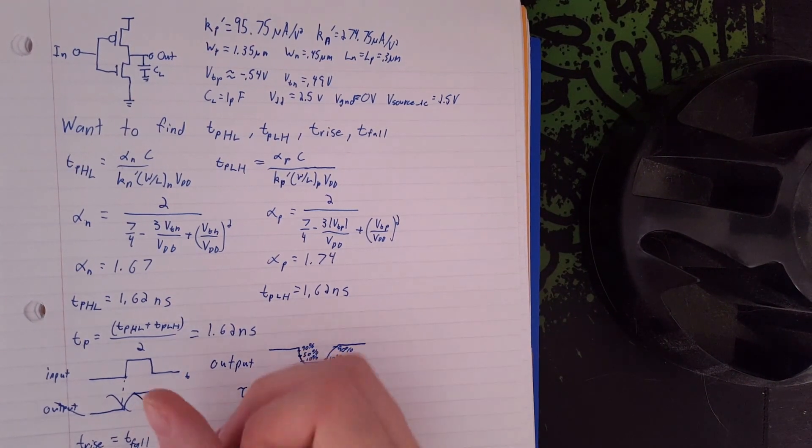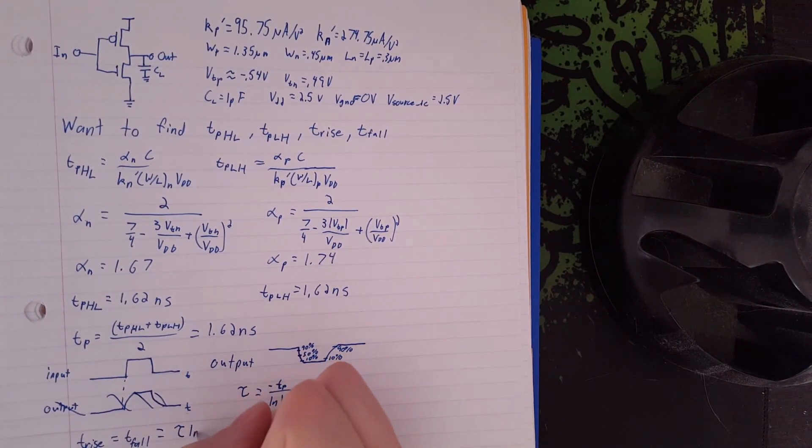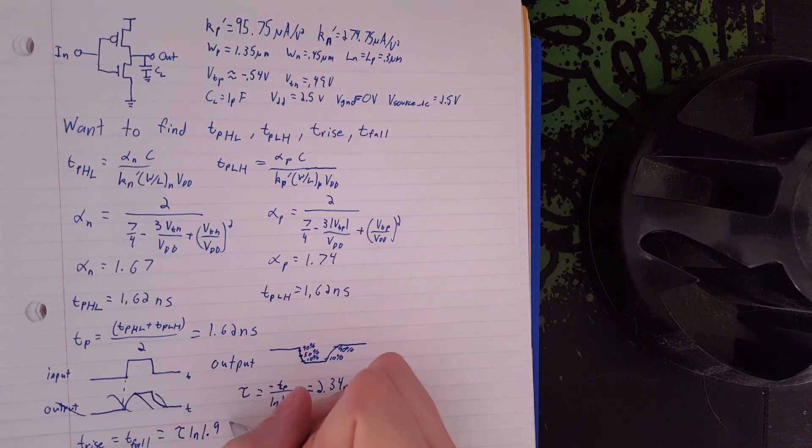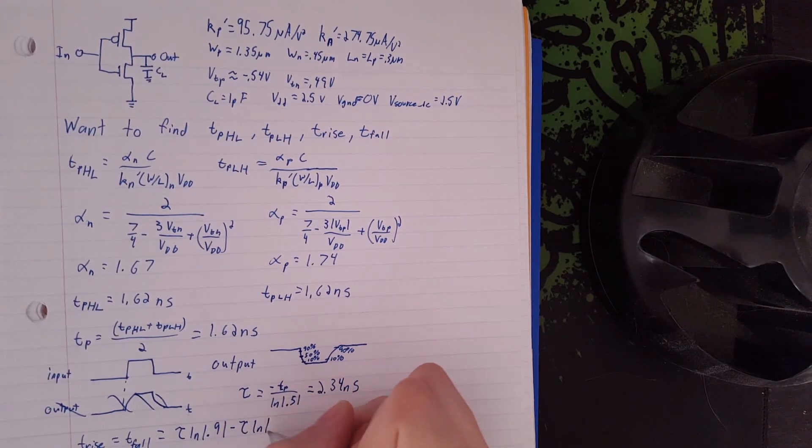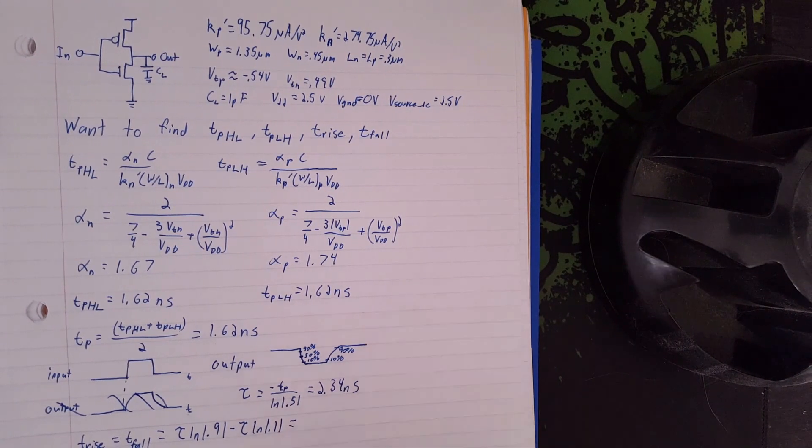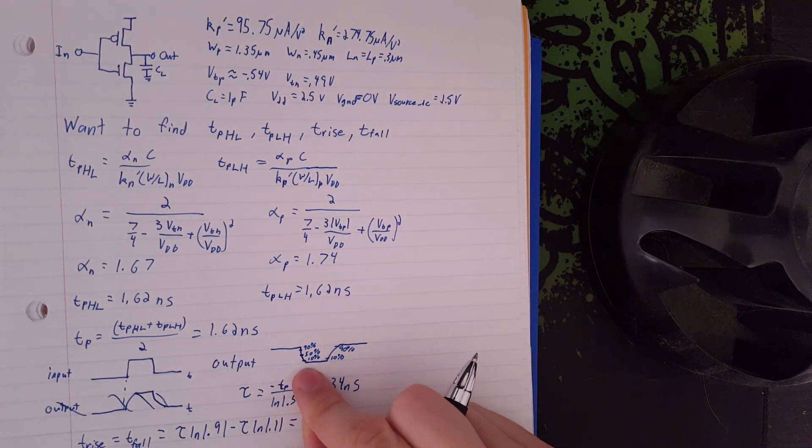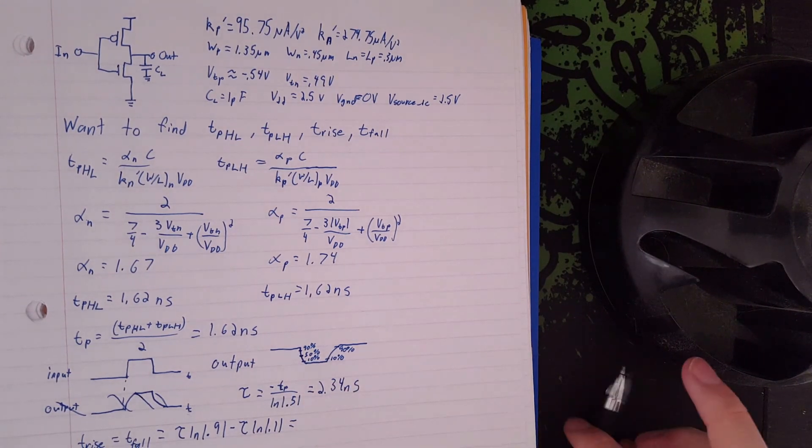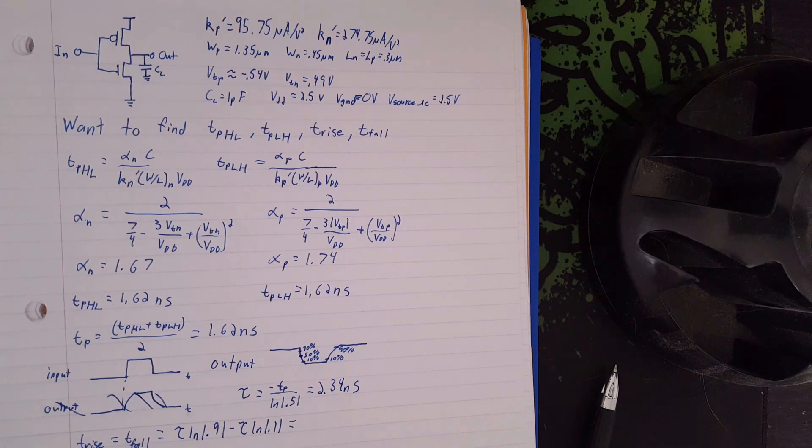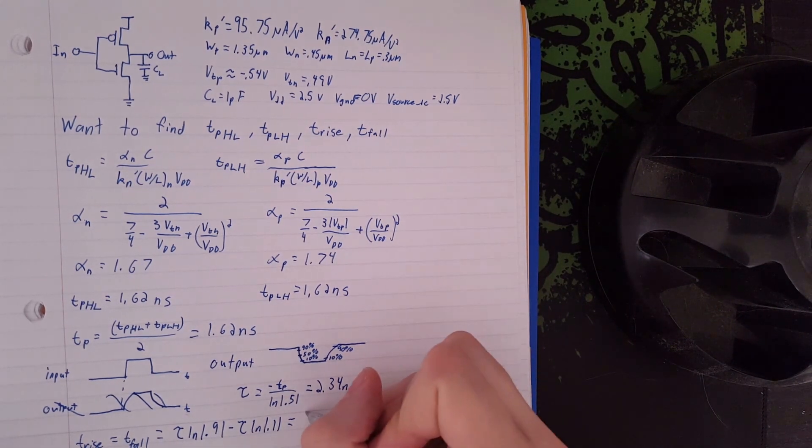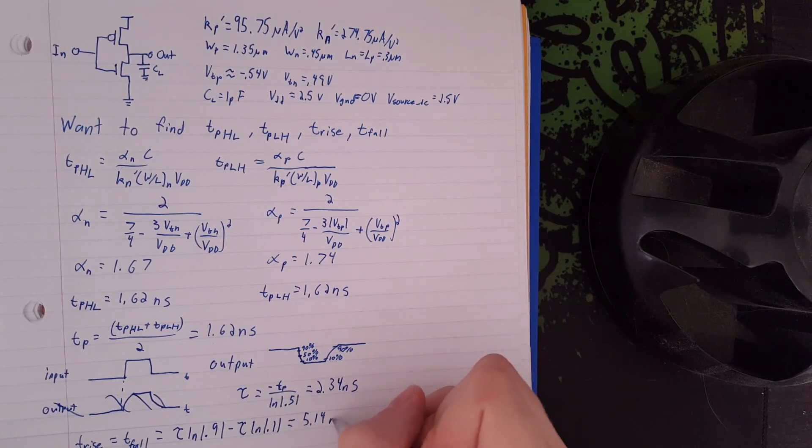So to calculate that, we'll just do tau of ln of 0.9, which is 90%, minus the tau times ln of 0.1, which is 10%. And so that's just going from our 90% marker to our 10% marker. And it's just the difference between the times it takes. And so that gives us 5.14 nanoseconds.